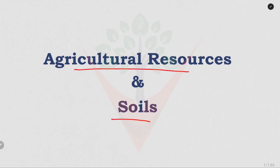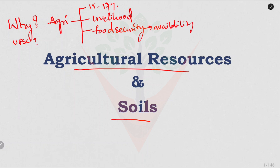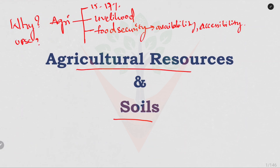Before going into the topic, just think why we are studying about agriculture and why it is important for UPSC. We all know that agriculture is the backbone of India's economy, contributing about 15 to 70 percent to India's GDP by providing livelihood to millions. It also ensures food security — the availability of food production in the country — and people should have the ability to buy or obtain the food, and also affordability. Food should be reasonably priced and within reach of all, such that a country can obtain food security.